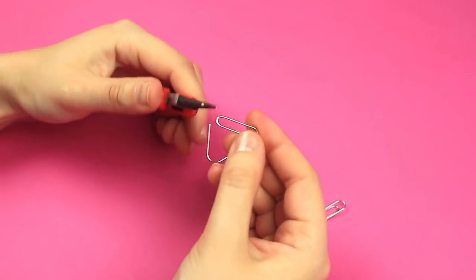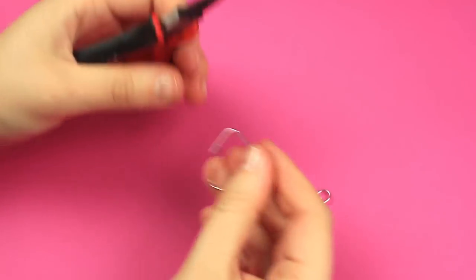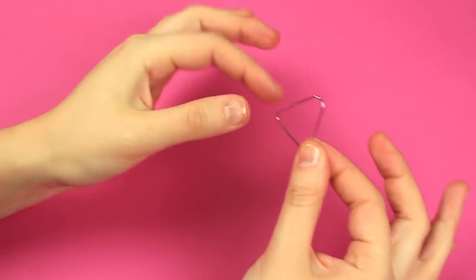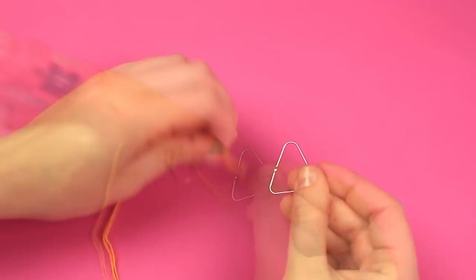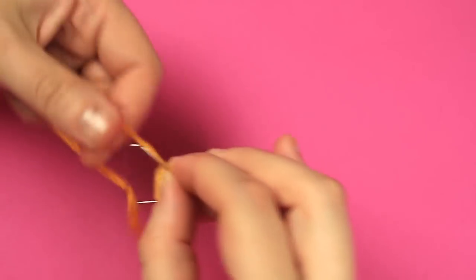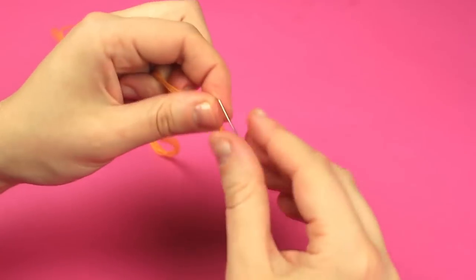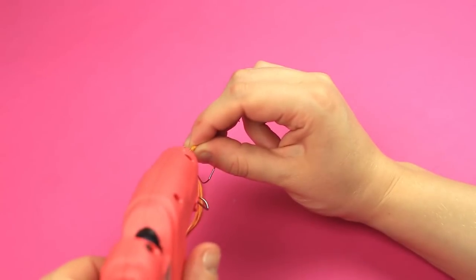Make the same styled earrings. Bend two clips to form triangles. Hot glue orange embroidery floss to the edge. Wind the thread around the clip. Add the glue as far as needed.